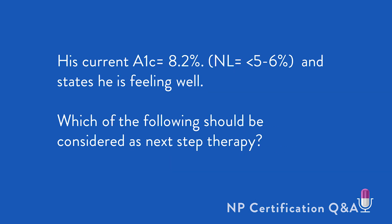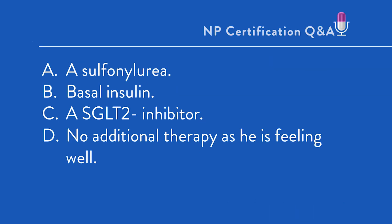His current A1C is 8.2%, where normal is less than 5.6%, and he states he's feeling well. Which of the following should be considered as next-step therapy? A, a sulfonylurea; B, basal insulin; C, an SGLT2 inhibitor; or D, no therapy as he is feeling well.